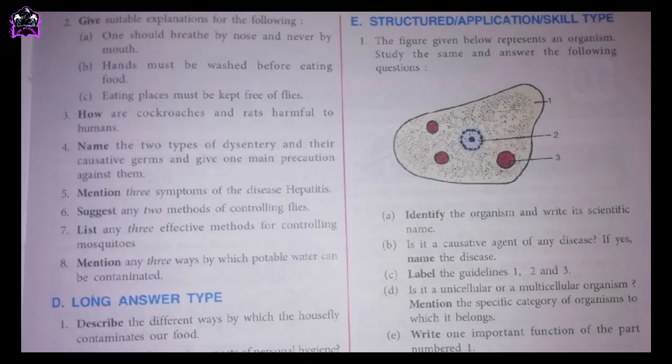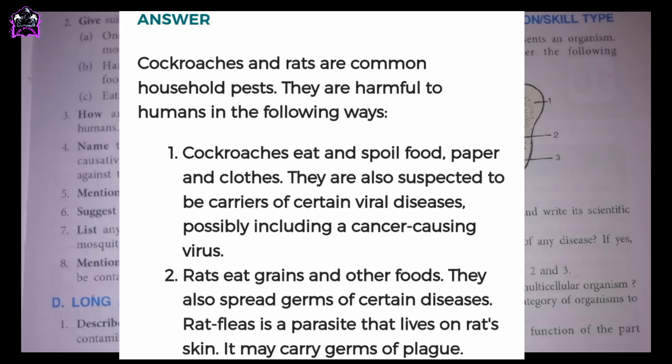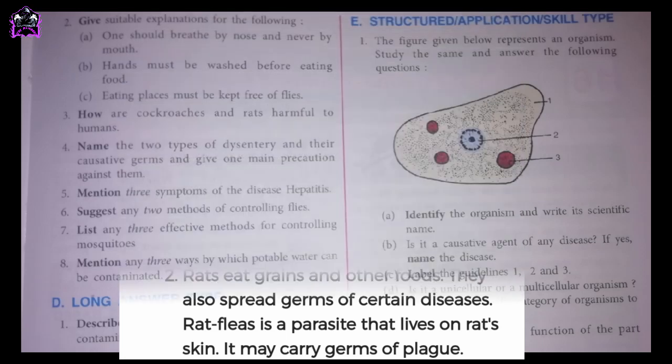Third one: how are cockroaches and rats harmful to humans? Cockroaches and rats are common household pests. They are harmful to humans in the following ways. One: cockroaches eat and spoil food, paper and clothes. They are also suspected to be carriers of certain viral diseases, possibly including a cancer-causing virus. Two: rats eat grains and other foods. They also spread germs of certain diseases. Rat fleas, a parasite that lives on a rat's skin, may carry germs of plague.